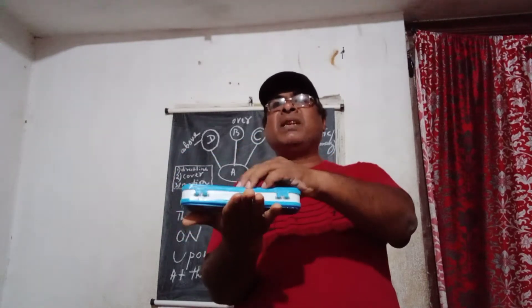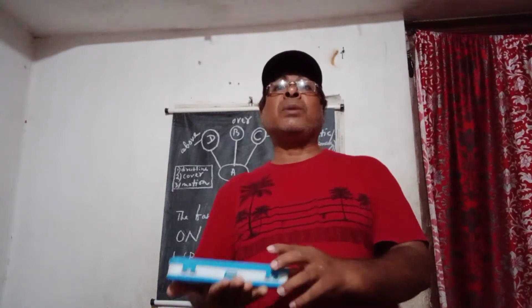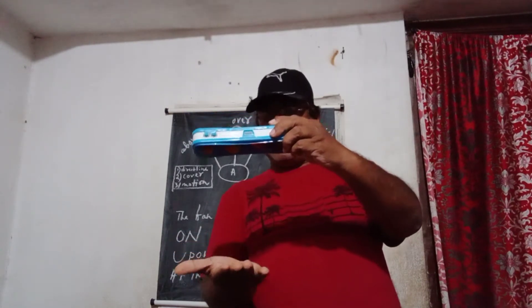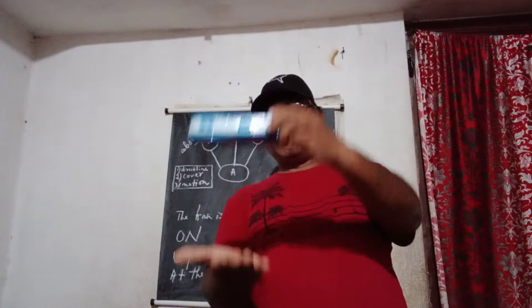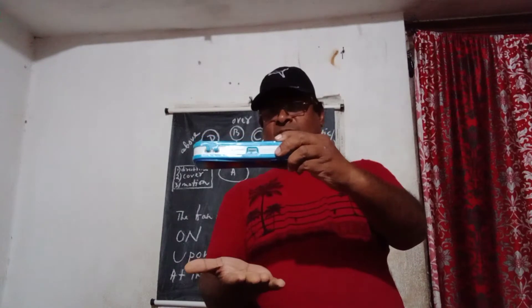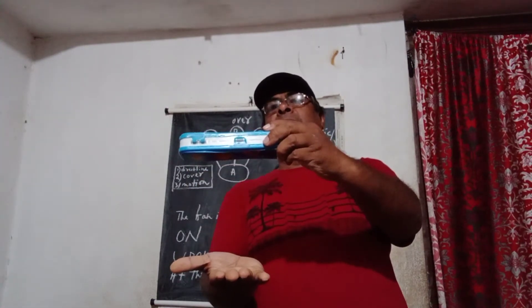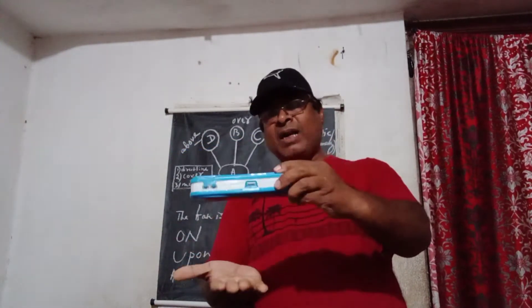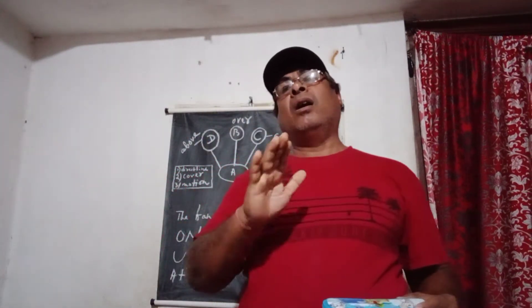Now for 'upon': suppose this box is upon my hand — there is no physical touch between the two objects, no physical connection between them. That's why in this case we say the box is UPON my hand. So that is the difference between 'upon' and 'on'.